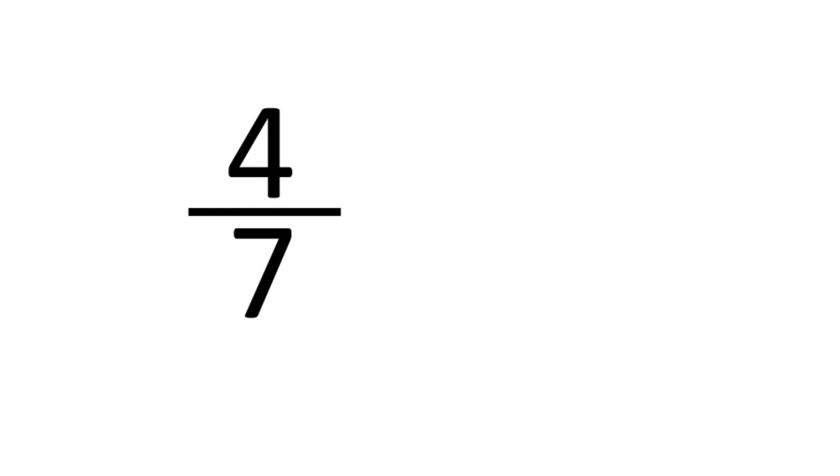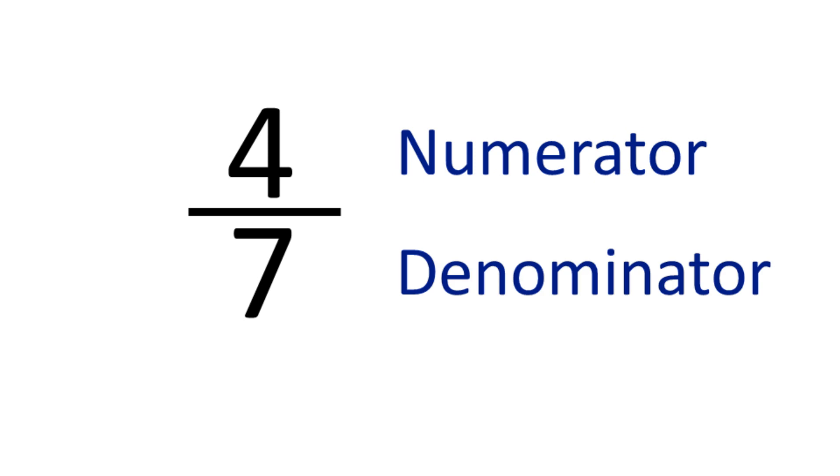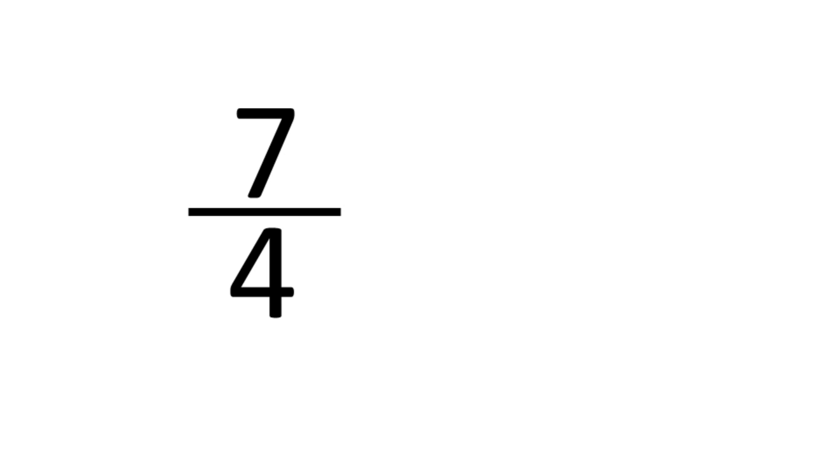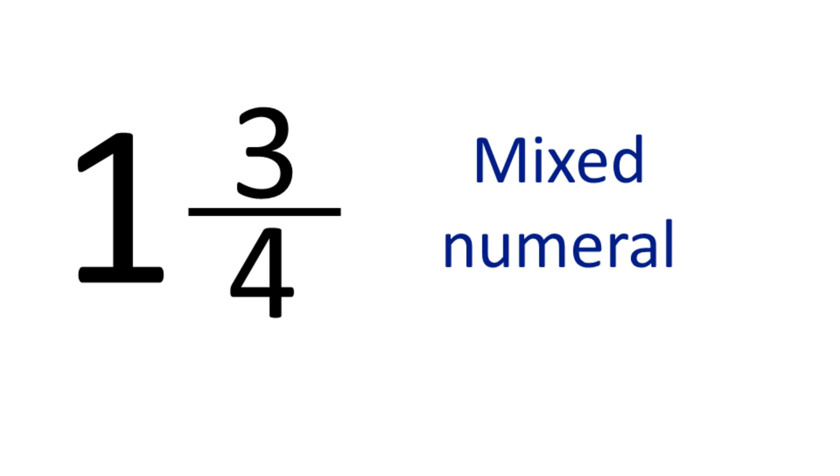Here's a quick terminology recap. The number on top of the fraction is the numerator. The number below the line, the denominator. If the number on top is bigger than the one below, then we have an improper fraction. And if it's a number written next to a fraction, it's called a mixed numeral.